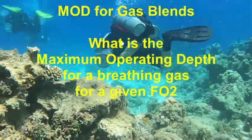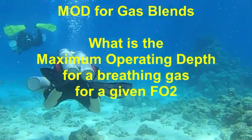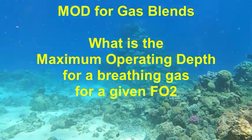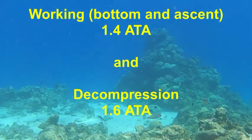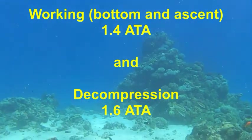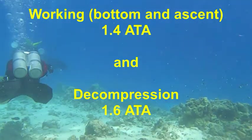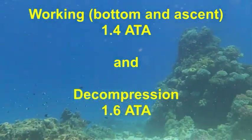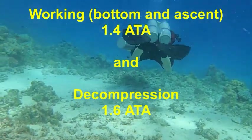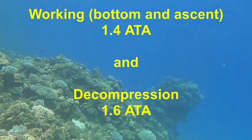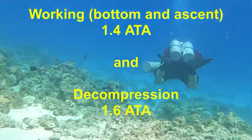The first calculation involves the MOD for gas blends — specifically, what is the maximum operating depth for a particular breathing gas that has a given fraction of oxygen. There are two types of calculations: the first is for the working condition (bottom or ascending to first deco stop), using 1.4 ATA; the second is for a decompression gas, using 1.6 ATA. Different certification agencies may use different ATAs, but these are the numbers we will use today.